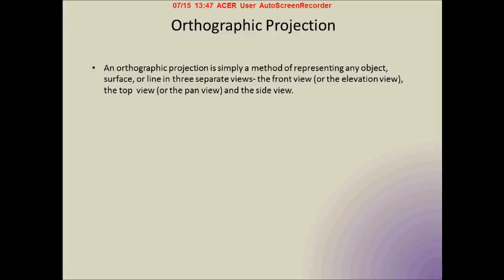The first thing we need to understand is what an orthographic projection is. An orthographic projection is simply a method of representing any object, surface, or line onto a two-dimensional screen or paper. Normally a surface or line is already two-dimensional, so it is not very useful to discuss orthographics for them. But for three-dimensional objects, orthographics are very useful.